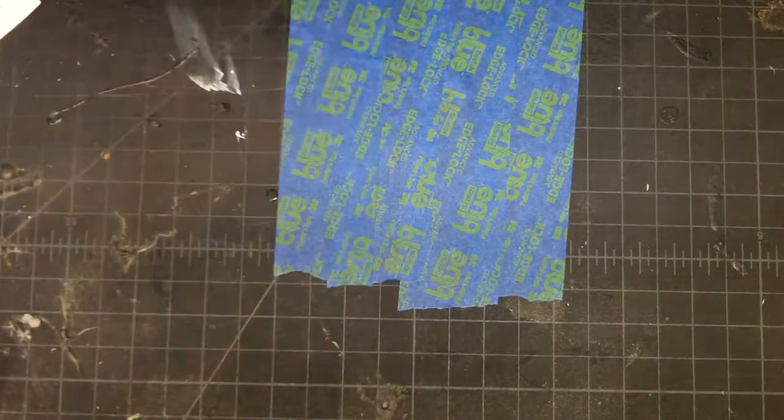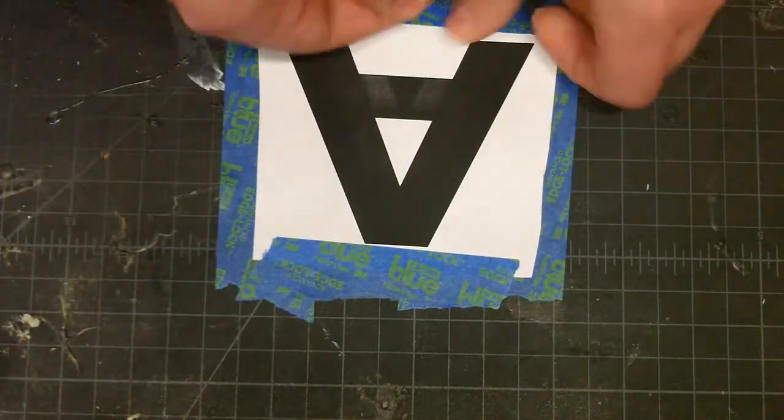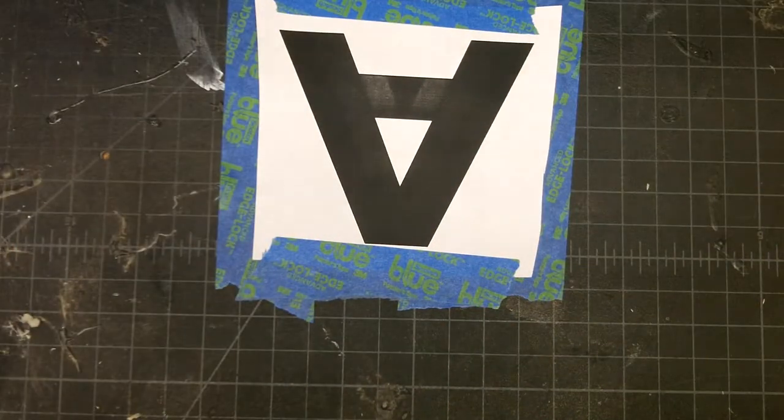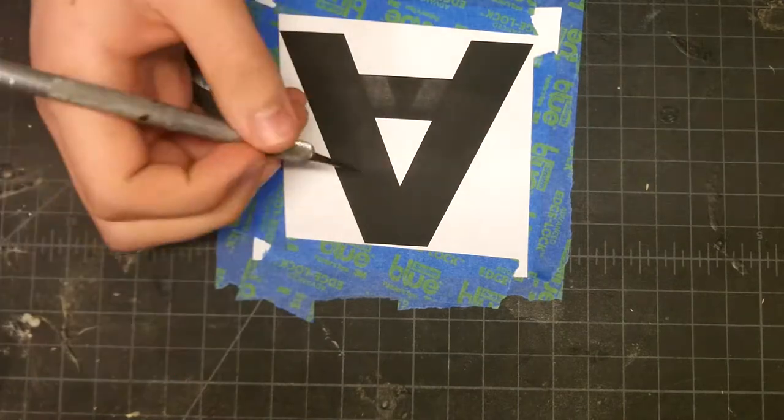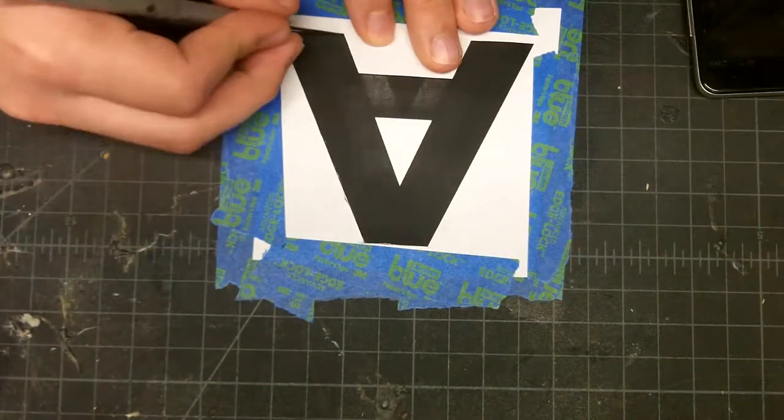Then I started making a stencil for the A. I printed out an A and used that as a template just so I'd make sure I did it right. You could just use masking tape.